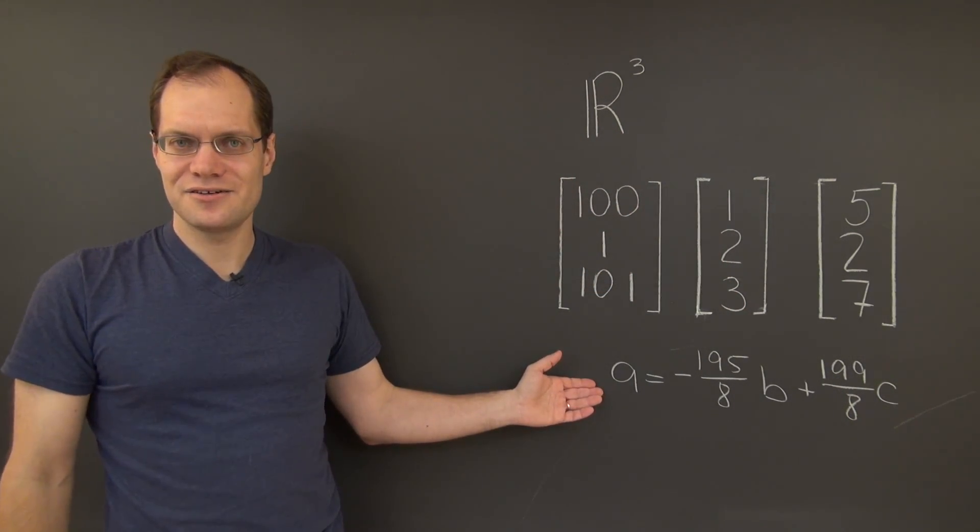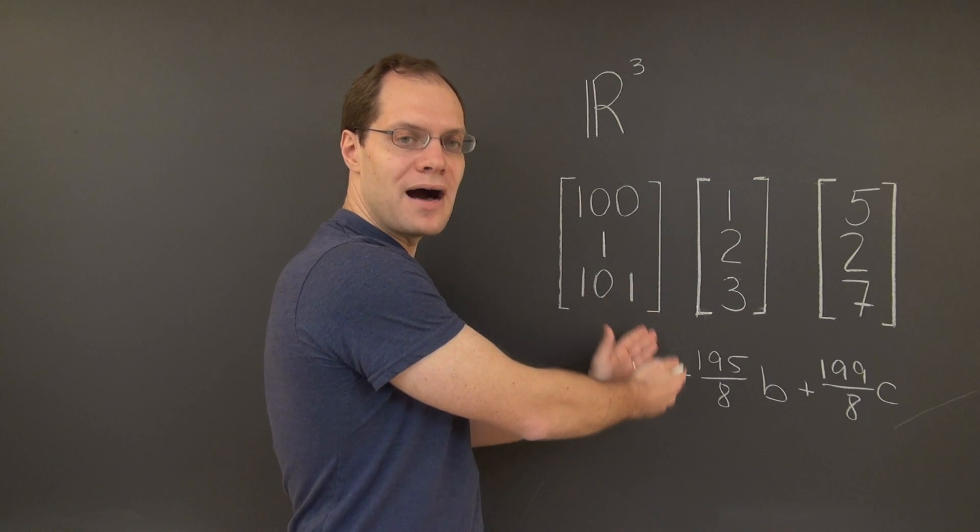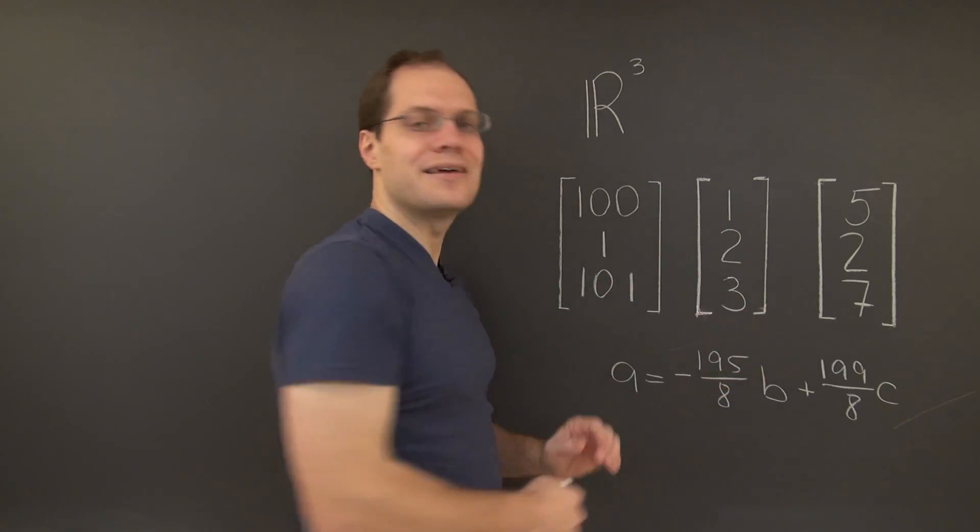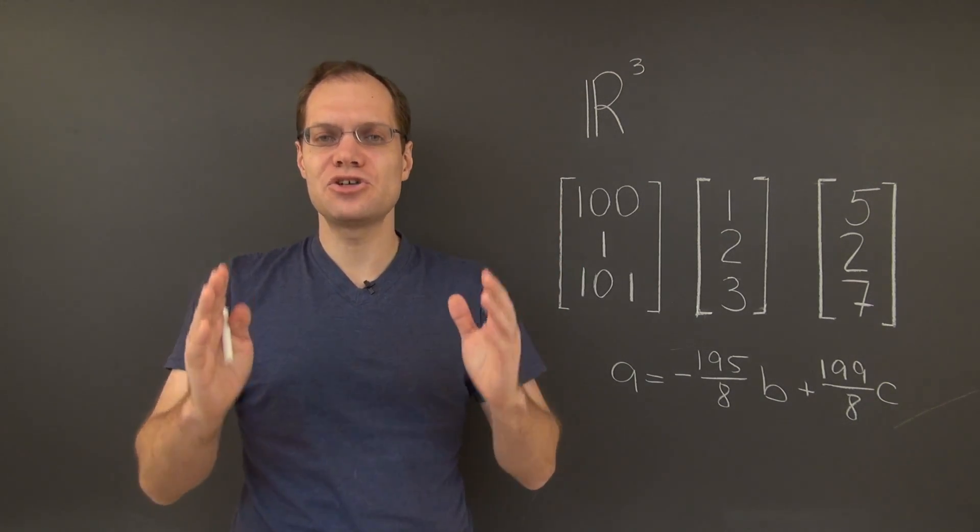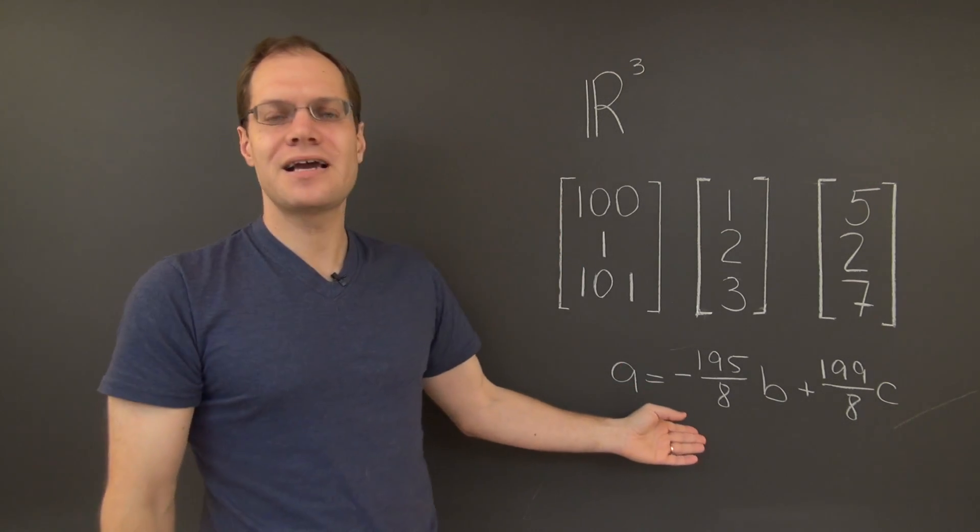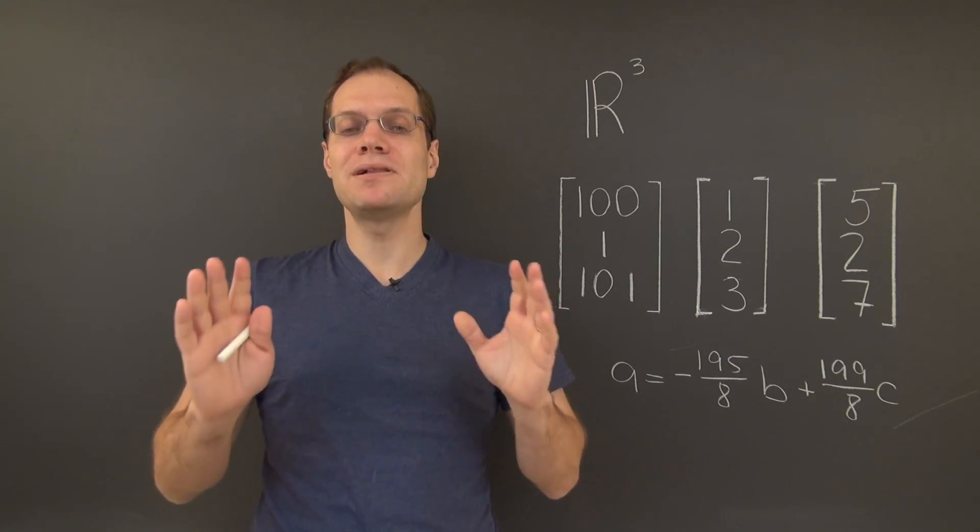This will be the answer. And I think this should convince you that we could not have possibly guessed what the linear combination is. But we didn't have to. We completely circumvented a specific calculation. We simply used logic and simple counting.